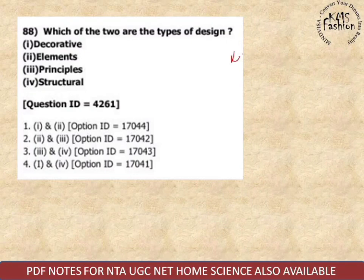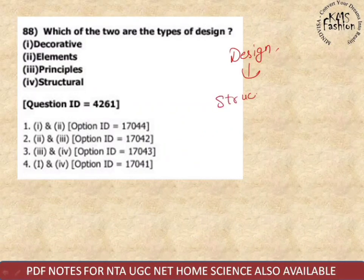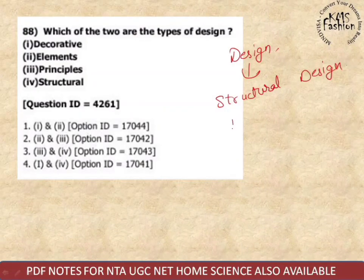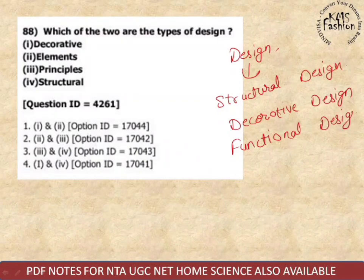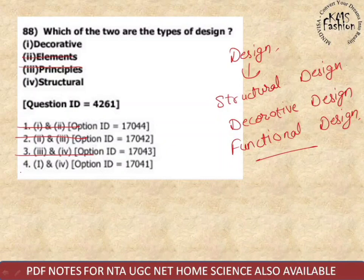Next question: two types of design. They are asking about different kinds of design. We have structural design, which is an integral part of the garment; then decorative design, which is used for surface enhancement; and functional design. In this question we need to eliminate second and third options. Answer number four is correct.